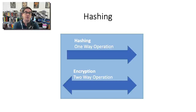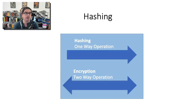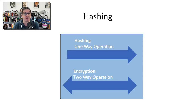When we compare this to something like encryption, encryption is a two-way operation. So you have an encryption key that you use to encrypt some data and then use that same key to decrypt the data, hence the two-way nature of it. With hashing it's one way only. So we hash data with a hash function and you cannot go back from that hash code to get back to the original piece of data.